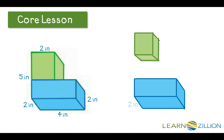I see that the blue prism has a length, width and height of 2 inches, 4 inches, and 2 inches. I see that the green prism has one edge length of 2 inches. I don't really know anything else about it. I want to figure out this edge and this edge.